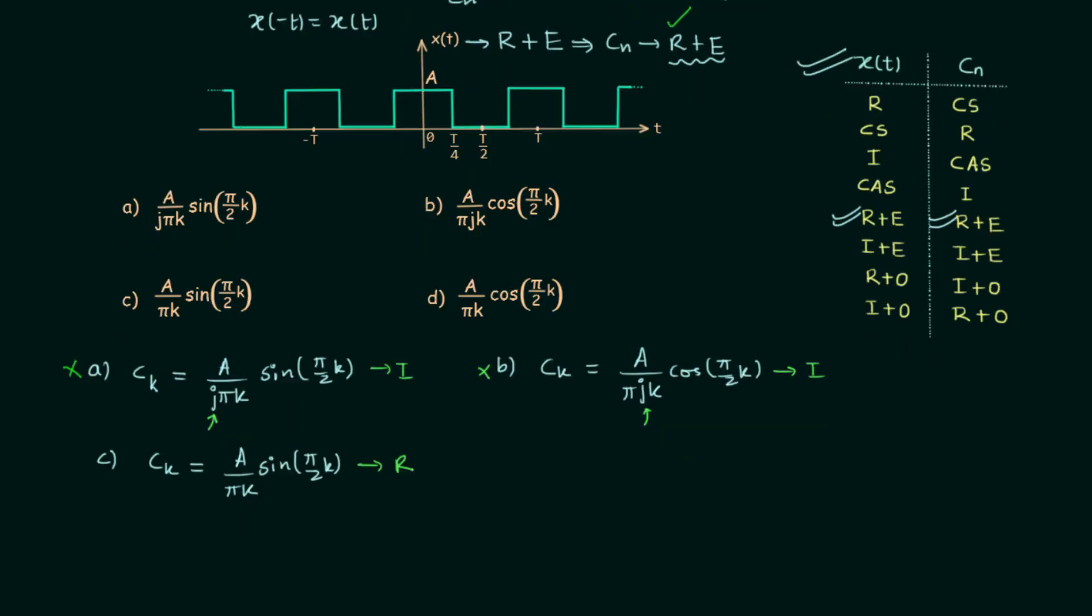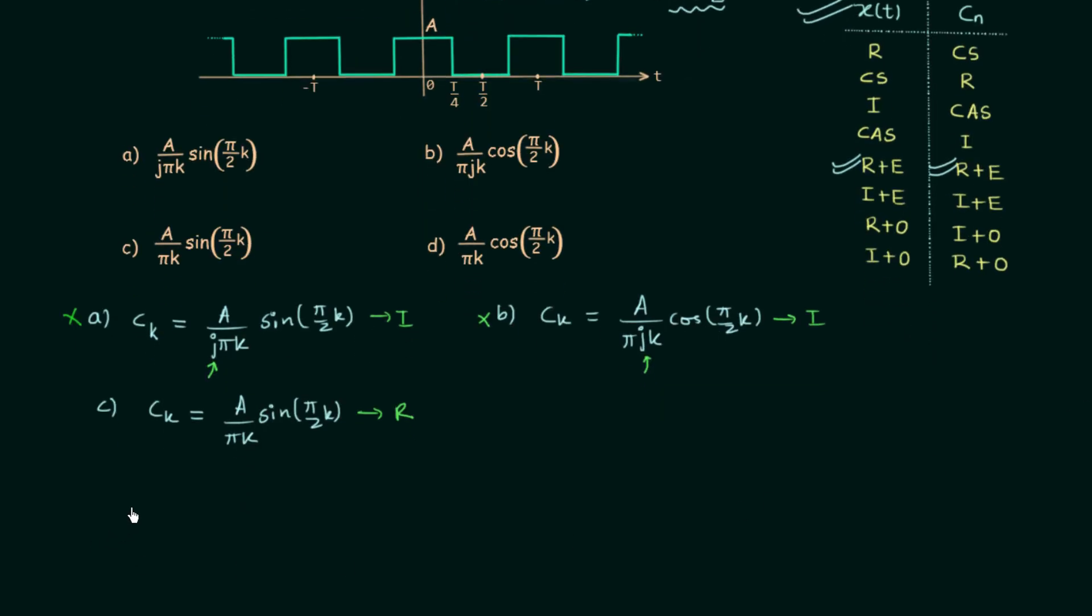And for this we will use the condition for a signal to be even. We will perform the reversal operation. We will find C(-K). So we have A over minus pi*K. In place of K we will have minus K. So we have A over minus pi*K sin inside the bracket minus pi/2*K, because K is equal to minus K.